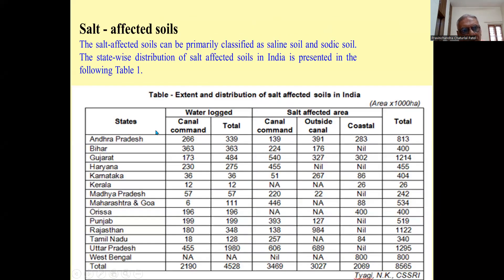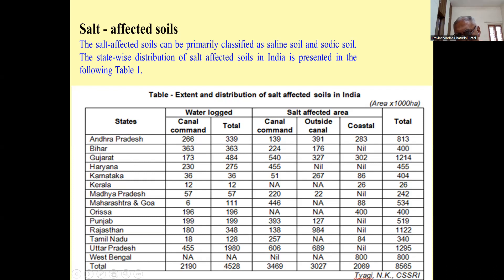So, saline soils — you can see in Table 1 that the maximum saline soils are in Uttar Pradesh at 1.295 lakh hectare, followed by Gujarat at 1.214 lakh hectare, as per the CSSRI data. Rajasthan also has 1.122 lakh hectare, whereas other states have lower total salt-affected soil.